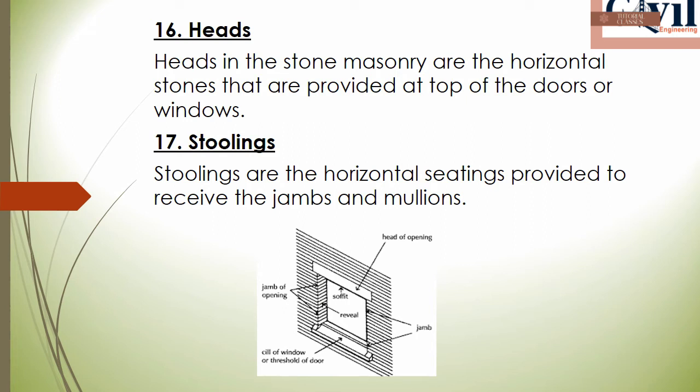The next one is stoolings. Stoolings is a horizontal seating arrangement. We use stoolings at jambs or mullions to provide a seating surface.